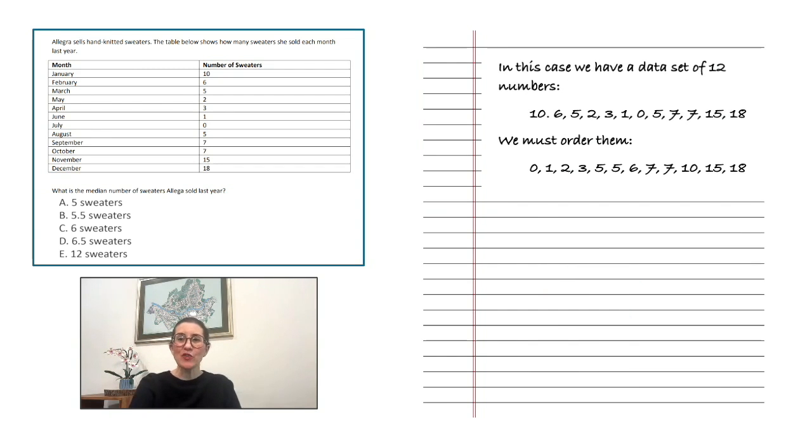In our final question, we are asked for the median number of sweaters that Allegra sold in the previous year. The median number is the middle number, found by ordering all data points and determining the one in the middle. In the case of two middle numbers, we take the mean of those two numbers, or the average, which is found by adding the two together and then dividing them by two.